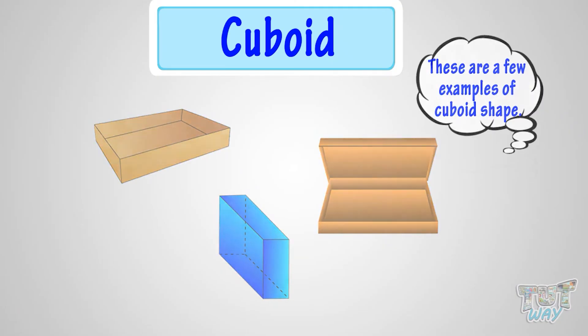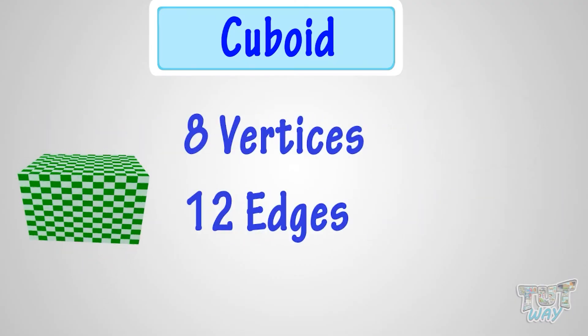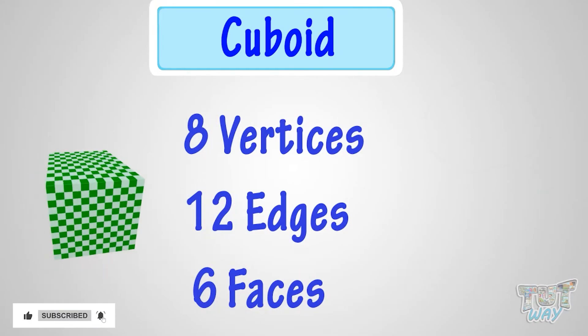So, what have we learned? We have learned that a cuboid has 8 vertices, 12 edges, and 6 faces. Good!